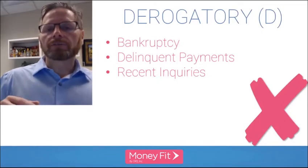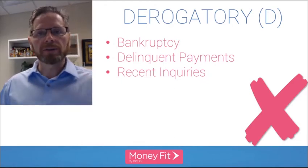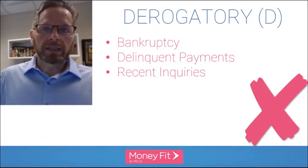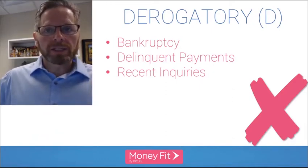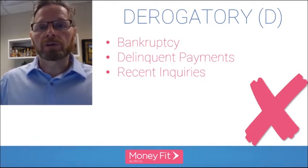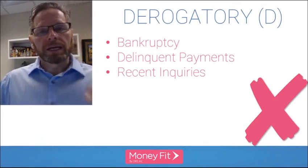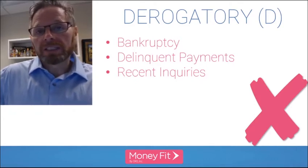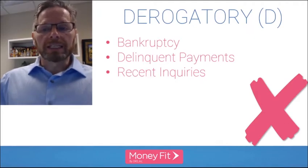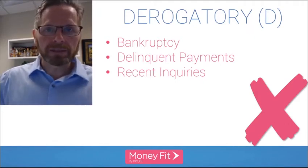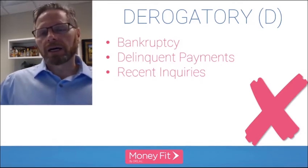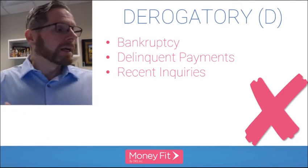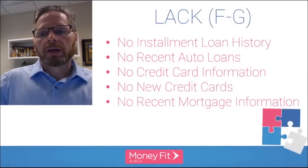D codes are for derogatory or negative public records and other things that can bring down your score. Bankruptcies are found in these codes. Before 2018, the public records section also included foreclosures and judgments, but as of 2018 the consumer reporting agencies stopped collecting and reporting that information, so you'll only see bankruptcy now. There are also several D codes for delinquent payments — missed or late payments — and for recent inquiries if you applied for a lot of new credit in a short period.